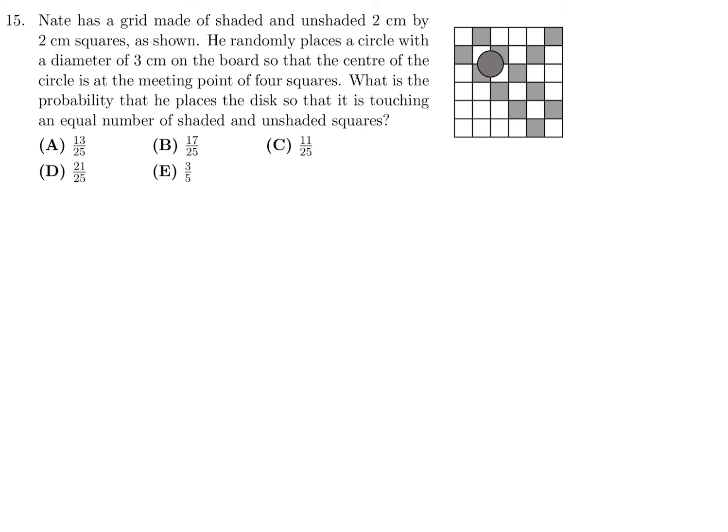Nate has a grid made of shaded and unshaded 2 cm by 2 cm squares, as shown. He randomly places a circle with a diameter of 3 on the board so that the center of the circle is at the meeting point of 4 squares. What is the probability that he places the disk so that it is touching an equal number of shaded and unshaded squares? Well, it's a probability, so it's going to be something over something. The denominator is the total number of choices, which is the total number of centers that you can place.